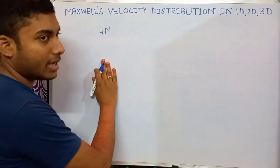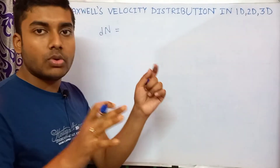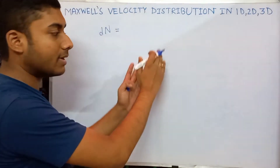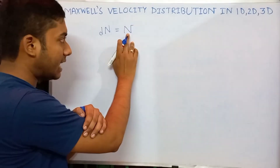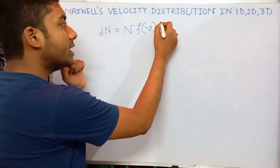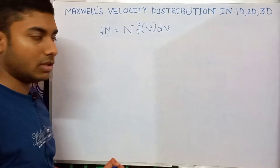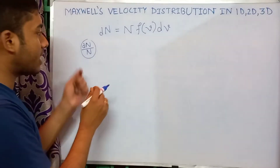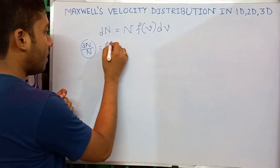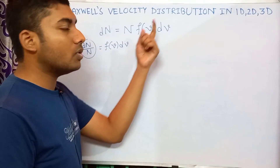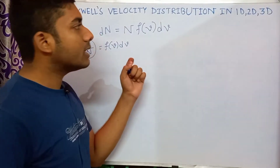We know that the number of gas molecules in a given velocity range v to v+dv will be equal to the total number of gas molecules N into some function of velocity f(v) into dv. The quantity dn/n is the fraction of molecules, also called the probability. So f(v)dv is the probability of finding a particle in a given range v to v+dv.